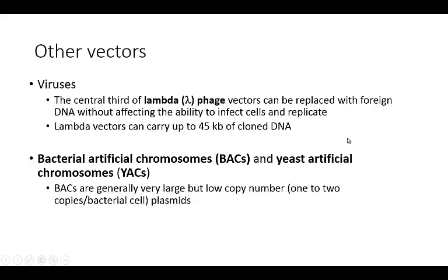Baculoviruses are viruses that infect insect cells and are often used for eukaryotic gene expression. When expressing genes in bacterial cells, we may not get all of the post-translational modifications that are required, because eukaryotic cells often perform many different types of modifications to their proteins — and these modifications sometimes need to happen before proteins can be fully active. Bacteria simply don't have the machinery for this, so by expressing genes in baculoviruses in insect cells, we're able to achieve many of these required modifications.